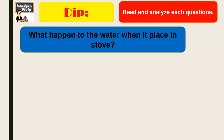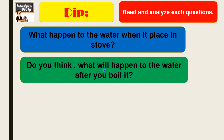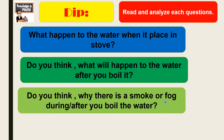Try and analyze — what happened to the water when you placed it on the stove? Yes, the water is boiling. What will happen to the water after you boil it? The water will become hotter and it will give off steam or hot air. Why is there smoke or fog after you boil the water? It is because the water boils and then it turns into steam.